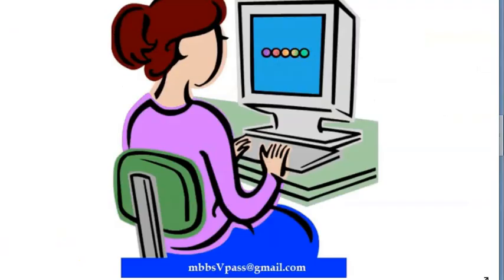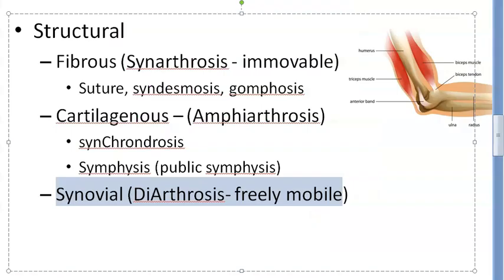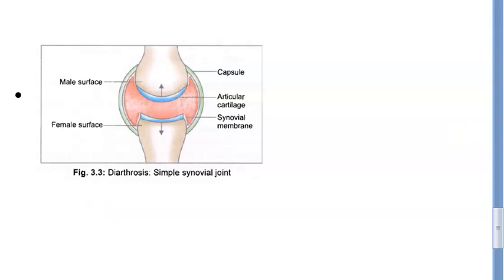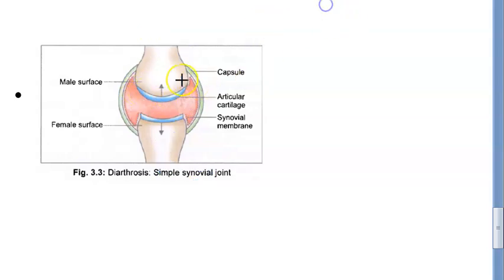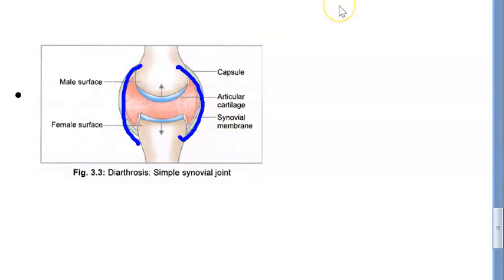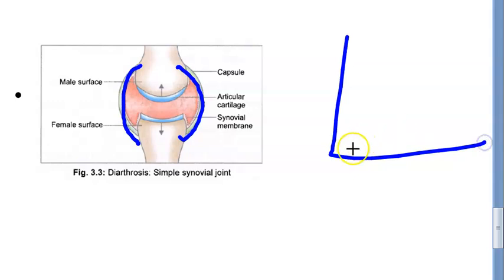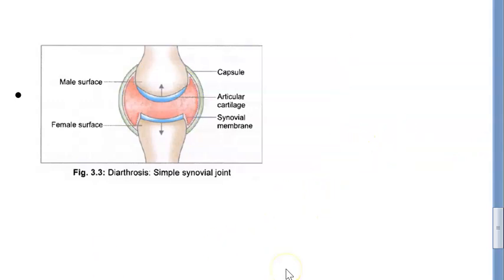In synovial joints you have pivot joint, hinge joint, plane joint, ellipsoid, condylar, saddle type joint - so many types are there. Those joints will be something like this - just an example. There is a bone here and a bone here, and there is articular cartilage which they have marked here. Then there is a capsule, inside there is some synovial fluid and synovial membrane. Imagine how easily the bones can move - it is quite freely movable. This is a synovial joint - a freely movable joint. Some restriction may be there, but otherwise these are movable. And there are ligaments of elastic connective tissue which hold the bones together.